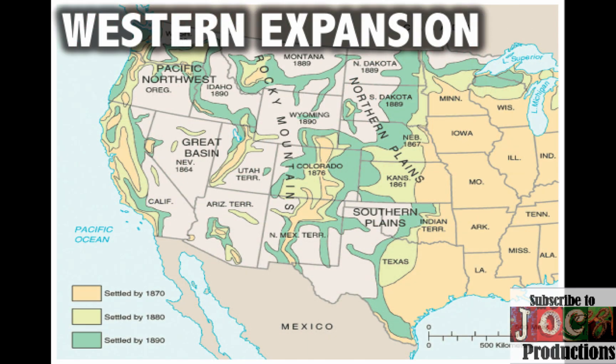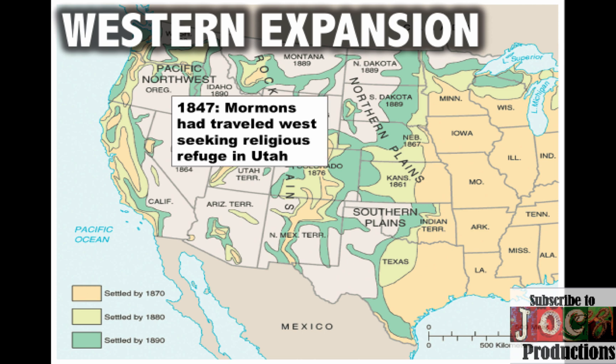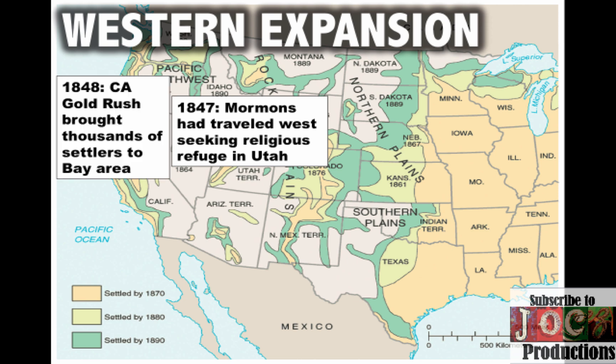The other part of this period is the idea of Western expansion. You can see on this map that expansion is taking place over time in the 1850s, 60s, 70s, and so on. For example, the Mormons were seeking religious refuge from intolerance toward their faith, and in 1847 they settled in Utah Territory. In 1848, there's the California Gold Rush, which brings a huge number of people into the area.